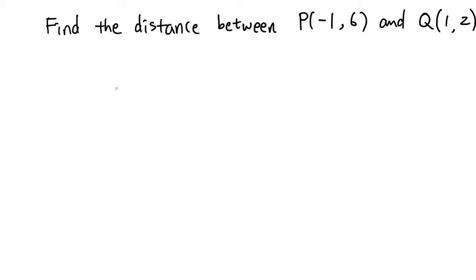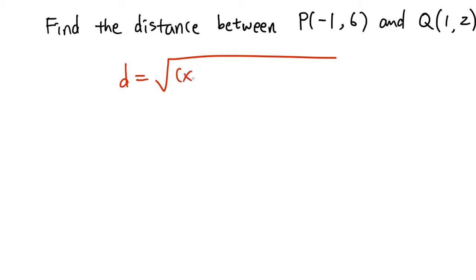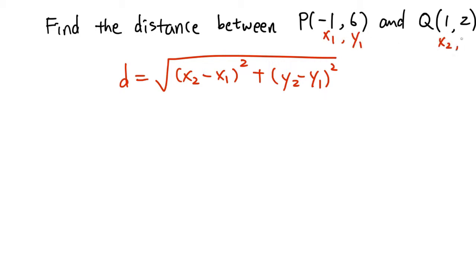Here is another distance problem. This time we are not going to draw any picture — we are just going to apply the distance formula to find the answer. Here is the distance formula: D equals the square root of (x2 minus x1) squared plus (y2 minus y1) squared, where x1 and y1 are the coordinates of the first point, and x2 and y2 are the coordinates of the second point.